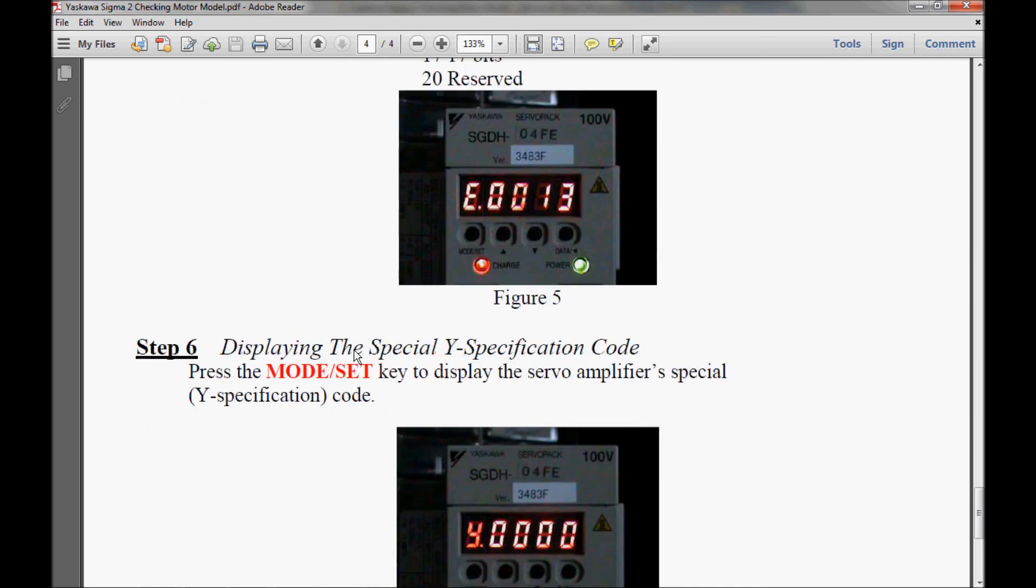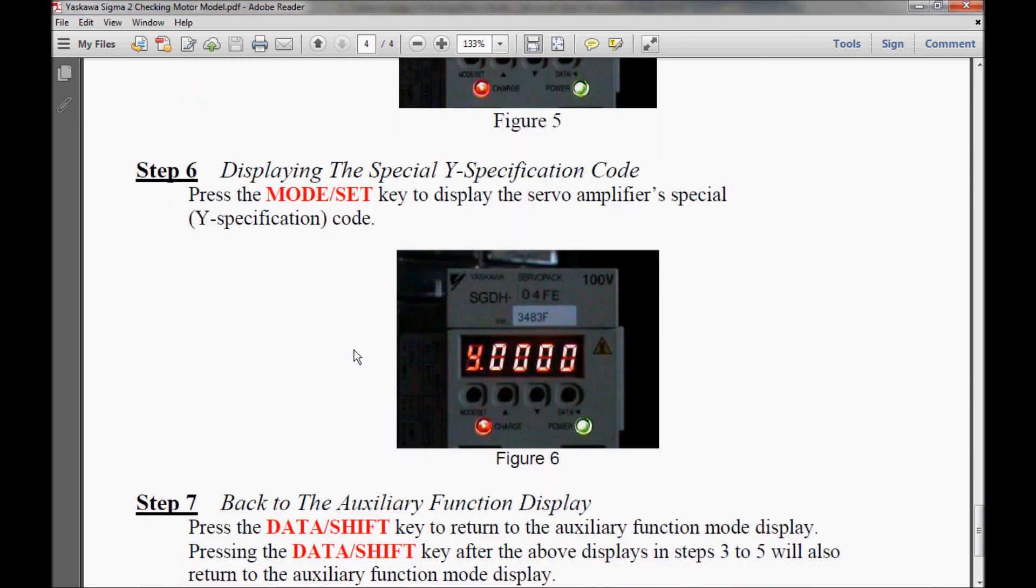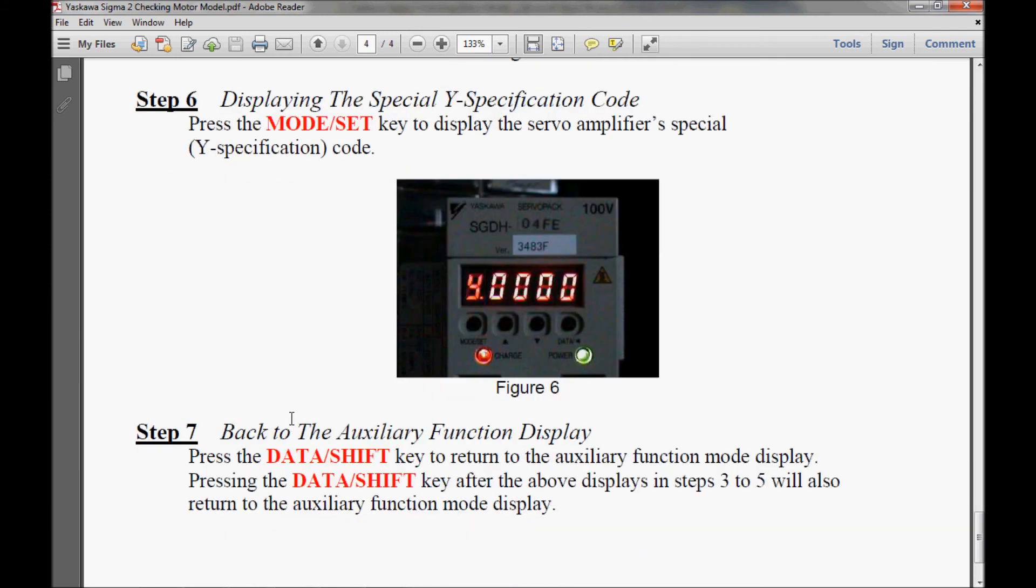Now, if I keep scrolling down here into step 6, it gives me the special Y specification code of the motor. And as you can see, it's all zeros. And here in step 7, I take it back to the auxiliary function mode display. And that's it for my step-by-step guide. So let's go to the video.